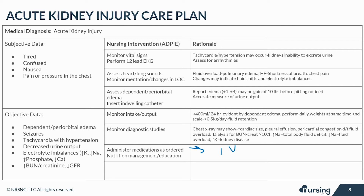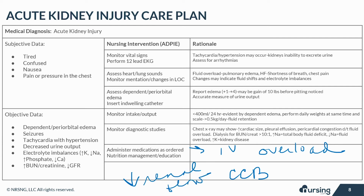IV fluids may be given for lack of fluid volume, but may be withheld in cases of fluid overload. Diuretics like furosemide and mannitol may be given to flush the kidneys of debris and reduce fluid overload, reducing hyperkalemia. Calcium channel blockers, if given early, can help reduce the influx of calcium in kidney cells to maintain cell integrity. If calcium level is too low, calcium may be infused. Antihypertensives like clonidine and methyldopa may be given to counteract the effects of decreased renal blood flow. Sodium polystyrene sulfonate, or K-Exalate, helps reduce potassium levels and treat hyperkalemia.